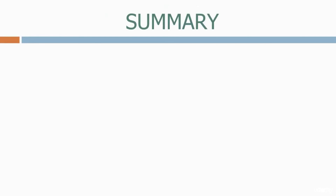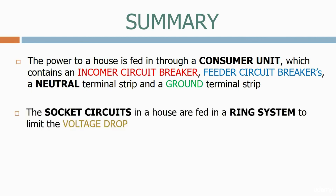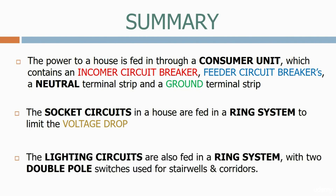Let's now summarize what we've learned today. The power to a house is fed in through a consumer unit, which contains an incomer circuit breaker, feeder circuit breakers, a neutral terminal strip, and a ground terminal strip. The socket circuits in the house are fed in a ring system to limit the voltage drop. The lighting circuits are also fed in a ring system, with two double-pole switches used for stairwells and corridors.